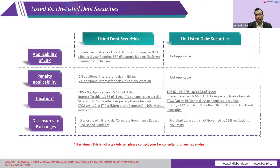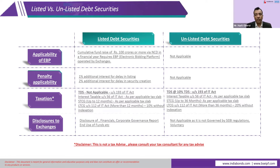Bonds generate two types of income: interest income and capital gains. For capital gains, the definition of short term in a listed debt security is 12 months. If you sell within 12 months, capital gains tax is at your marginal rate. For unlisted securities, the short-term definition is 36 months — so you must hold for 36 months to benefit from long-term capital gain taxation. For listed debt securities, if held more than 12 months, it qualifies as long-term capital gain, taxed at only 10% without indexation.